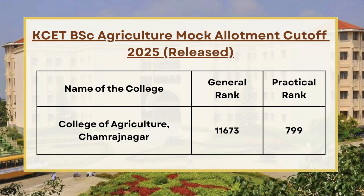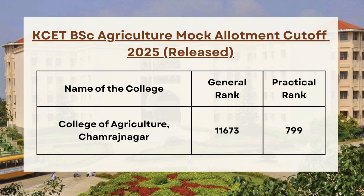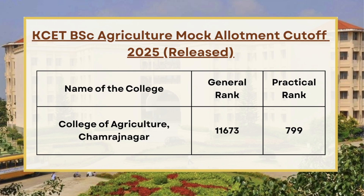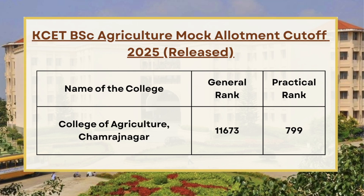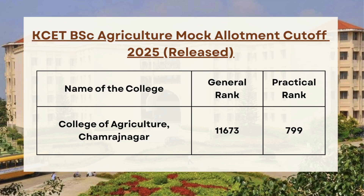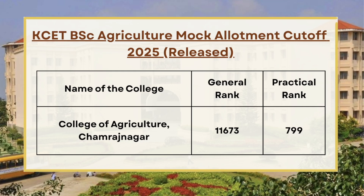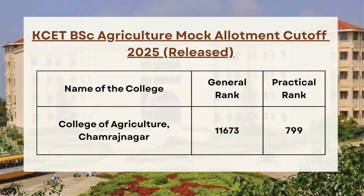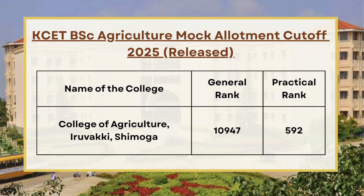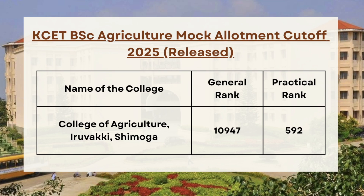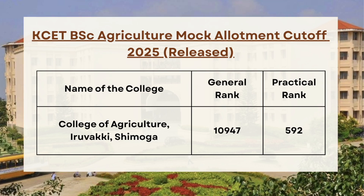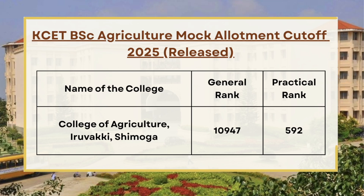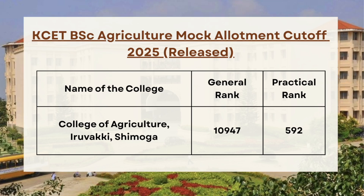If you wish to get more cutoff updates for different categories, then make sure to comment down the category name in the comment section and I will be providing the mock allotment cutoff for the same. Next we have College of Agriculture Shivmoga, so for general category the cutoff is 10947 and for practical the cutoff is 592.